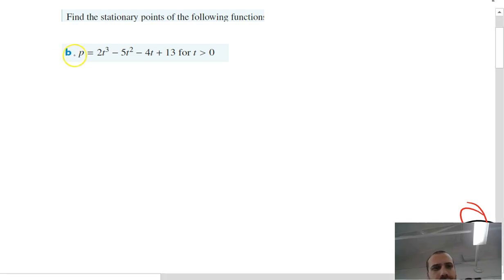If I want to find the turning point of this particular function, I need to find the derivative of the function. If I can find the derivative of the function, I can let the derivative equal zero because that's where the stationary point will be. So the derivative p dash equals 6t² - 10t - 4. There's my derivative function.